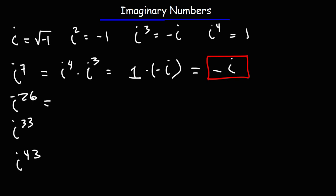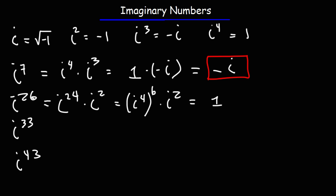Now let's move on to i raised to the 26th power. What is the highest multiple of 4 just under 26? Well, 24 is a multiple of 4. So I would write it as i to the 24 times i squared. Now i to the 24 is basically 4 times 6, so it's i to the fourth raised to the sixth power. i to the fourth is 1, and 1 to the sixth power is still 1. We can replace i squared with negative 1, so i to the 26th reduces to negative 1.